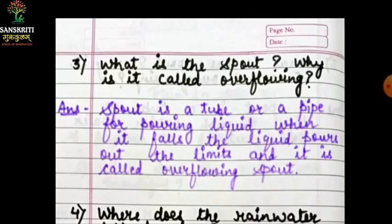Question number three: what is a spout? Why is it called overflowing? Spout kya hota hai? A tube or a pipe for pouring liquid. Spout ek tube hota hai, ek pipe type kya hota hai joh ki liquid ke bahne ke liye hota hai, jisse koi bhi liquid bahaar aa sake. Jab usmein se liquid nikalti hai, bahti hai, aur out of limit hokar bahaar aata hai — to usko hum kehte hai overflowing spout.